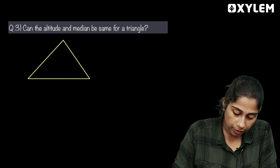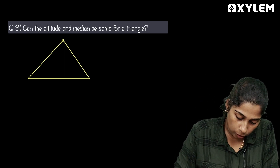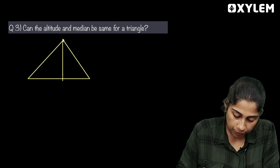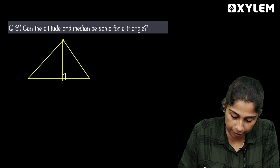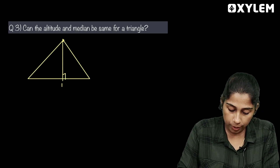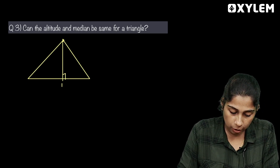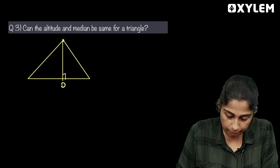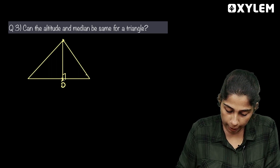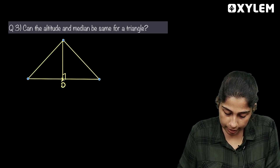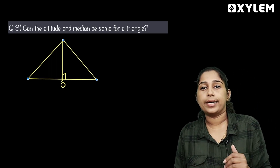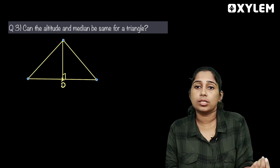When we drop the line from a vertex, it is perpendicular and also hits the midpoint at the same time. For an equilateral triangle, the altitude and median coincide.